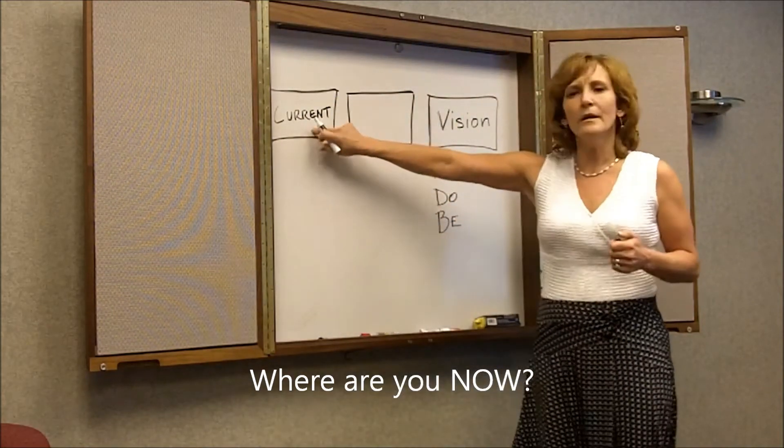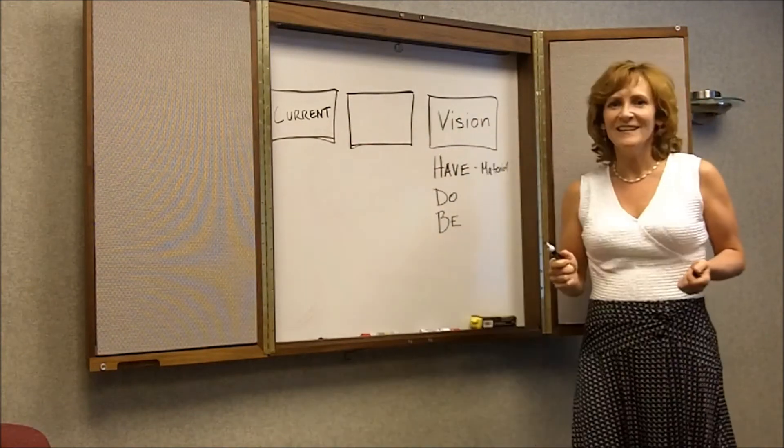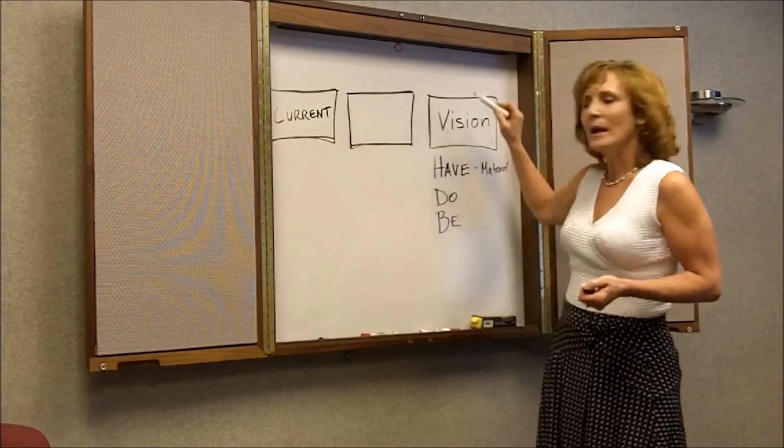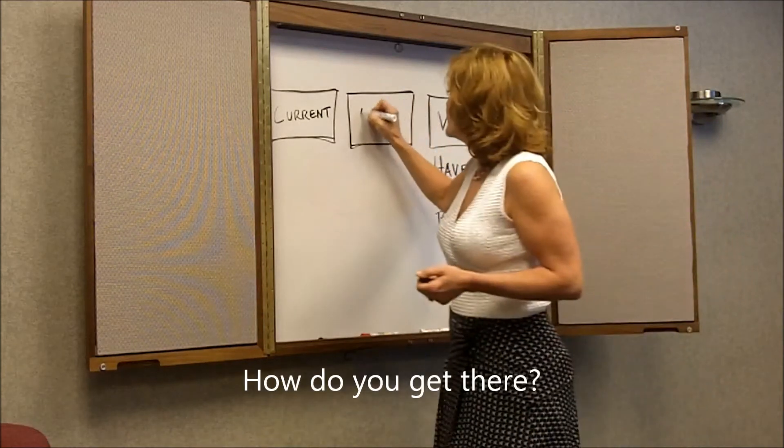By determining where we are now and where it is that we want to be, we can start to get that road map. So if we know where we are and where it is that we want to be, we can determine what actions or what steps are necessary to get us there. And that is this middle step.